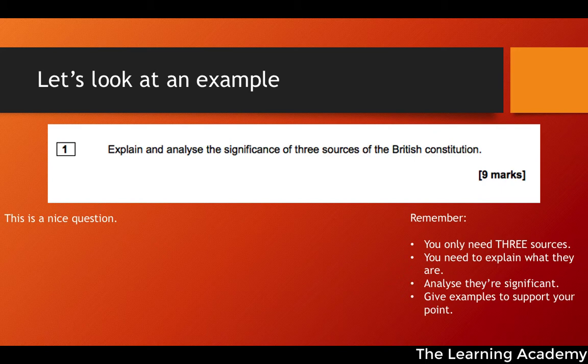For instance, if I were to explain statute law — that it's a source of the constitution developed through parliamentary statutes and legislation — and then went on to give an example of a constitutional convention, which is something completely different, that would show the examiner I probably don't understand the difference between the two. I need to give a specific example of a statute, such as the Constitutional Reform Act or even the 2020 Withdrawal Act.